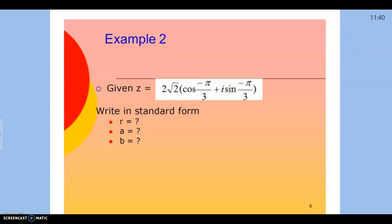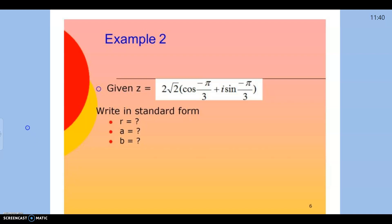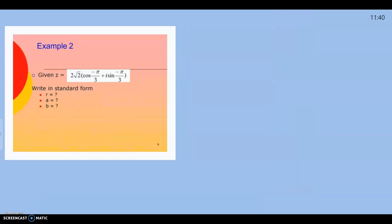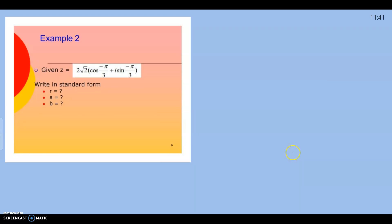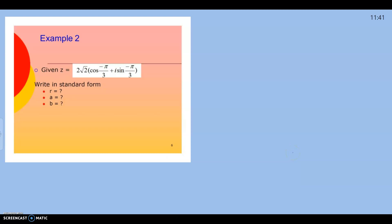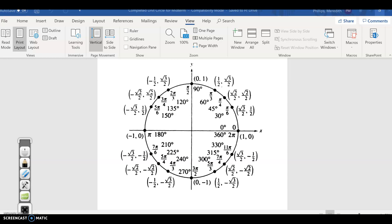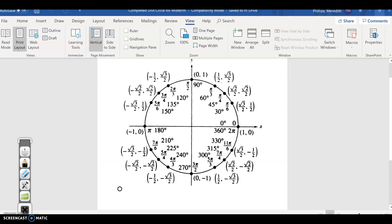Let's look at another example: 2 square root of 2 times cosine of negative pi over 3 plus i sine of negative pi over 3. R is 2 square roots of 2, and theta is negative pi over 3. That means you're rotating clockwise pi over 3. Negative pi over 3 is the same thing on your unit circle as 5 pi over 3.